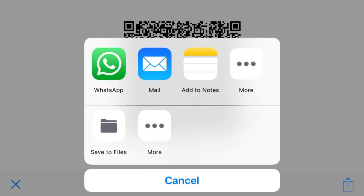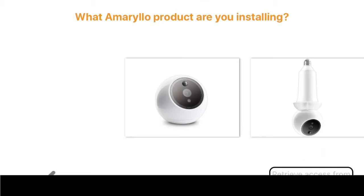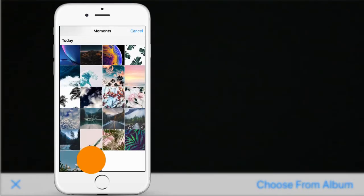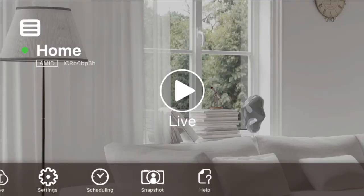Once the code has been shared, the recipient can open the Amarillo app. If the device has never installed any other camera before, you will arrive at the installation page. Simply tap on Retrieve Access from Installed Device, choose from album, select the saved QR code, and the app will set up the device.